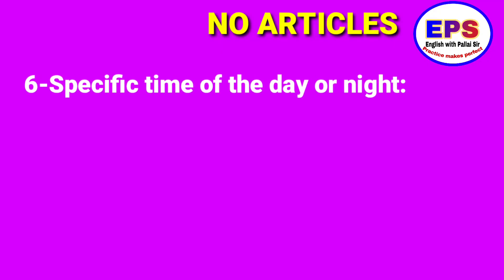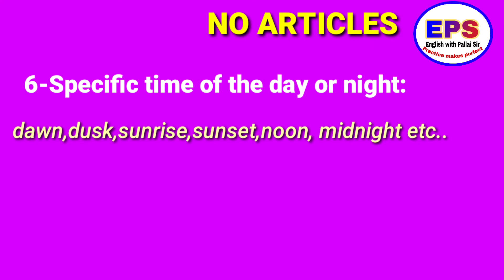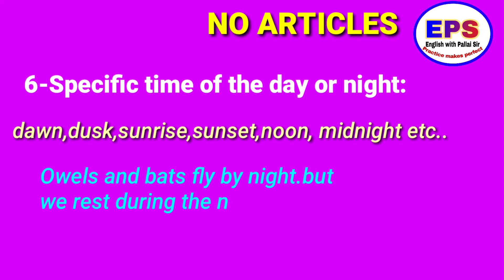For a specific journey we say: 'We took a bus' or 'the bus.' For time of day — dawn, dusk, sunrise, sunset, moon, midnight — no article is used. For example: 'Owls and bats fly by night.' But when referring to a specific period: 'We rest during the night' — here 'the' is used.